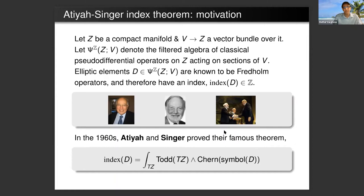We start off with a compact manifold and V a vector bundle over it, and the symbol Ψ of ZV is the filtered algebra of classical pseudodifferential operators on Z. The elliptic elements of this are known to be Fredholm operators and therefore have an index, which is an integer, which is the dimension of the kernel minus the dimension of the co-kernel.